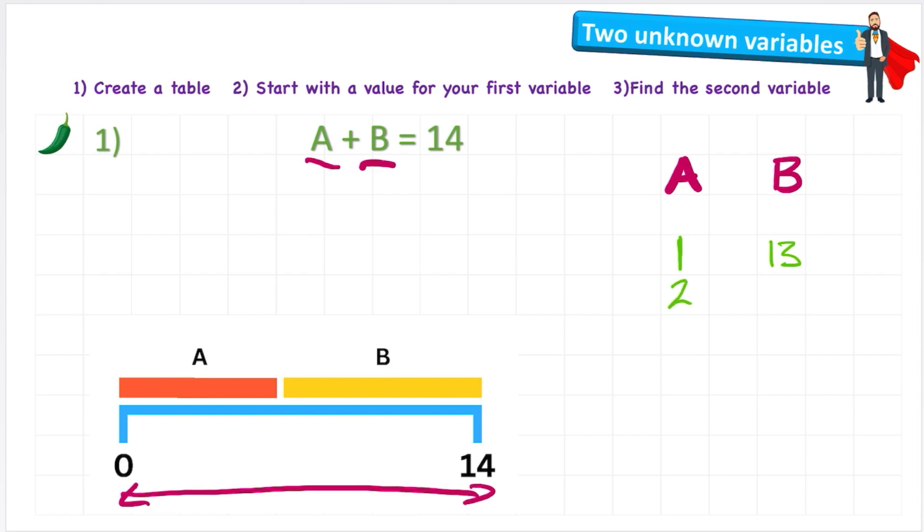Okay, let's carry on our table and let's say that we have A as 2. So again we're going to use the inverse. So 14 - A will equal B, and now we can substitute A with our 2. So 14 - 2 equals 12. So therefore B would be 12.